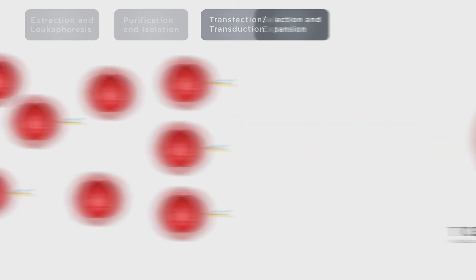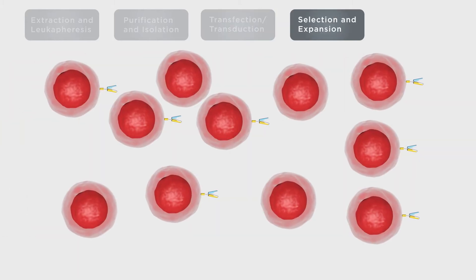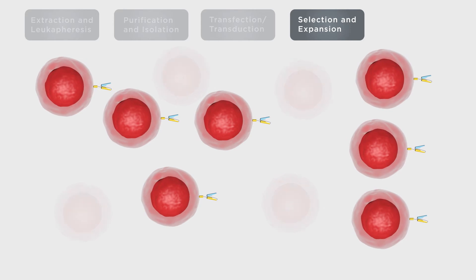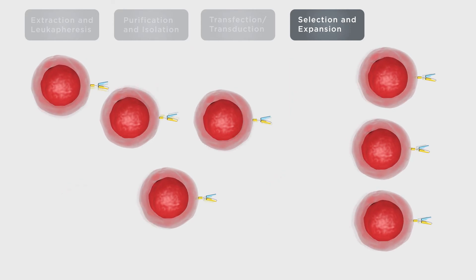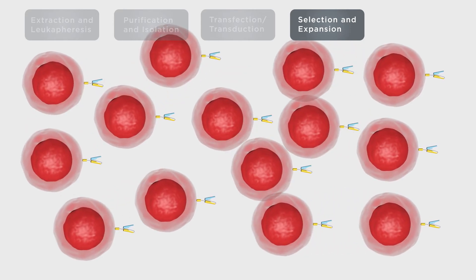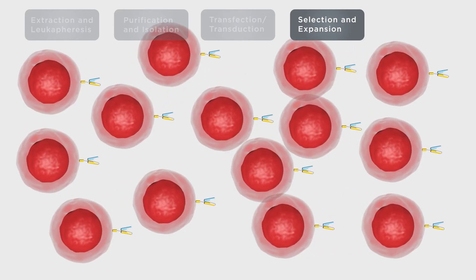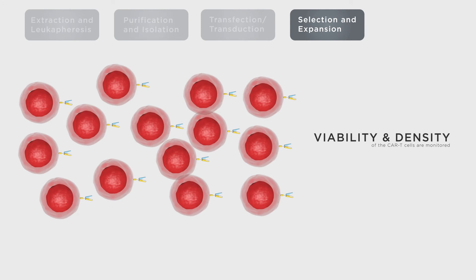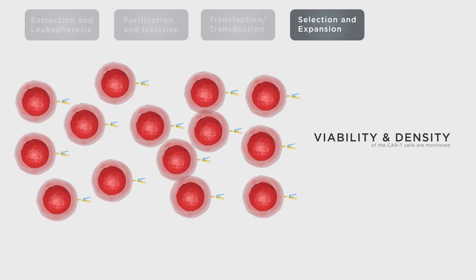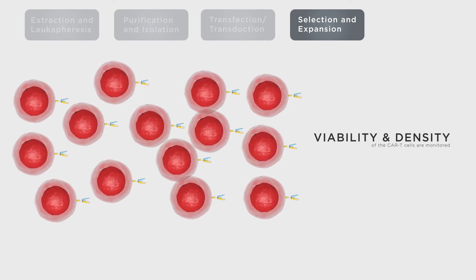After CAR expression is confirmed, non-expressing cells are removed and the newly generated CAR T cells are expanded. During and after this process, cell viability and density are monitored.